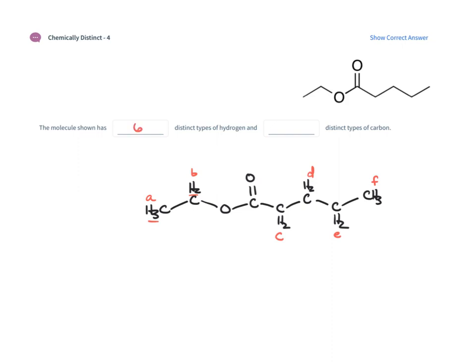Now let's look at the carbons, working from the original structure. We have the CH3 carbon — that's A. We have a CH2 carbon — that's B. They're both carbons but in different environments; one's closer to the oxygen. Don't forget about the carbonyl carbon — it doesn't have any hydrogen, but it is a distinct type of carbon, so that would be C. Then CH2 is D, the next CH2 carbon is E, another CH2 carbon is F, and then the CH3 is G. So this has seven distinct types of carbon.